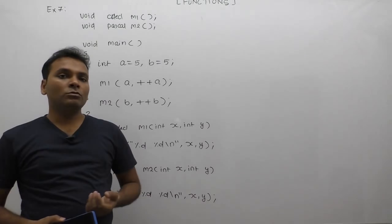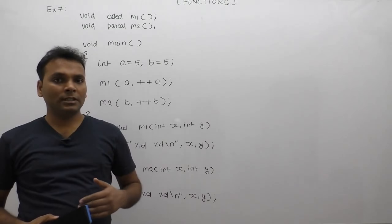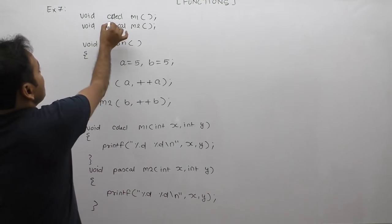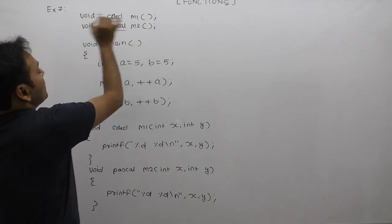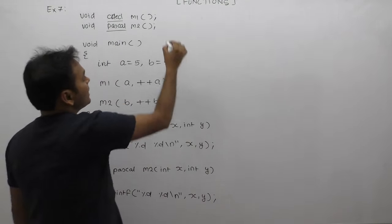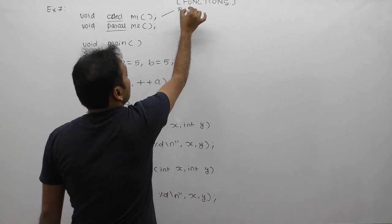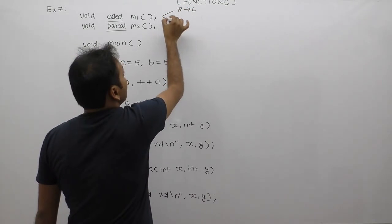Now, next example related to declaration types of functions. There are two types of function declarations available in C: C declaration and Pascal declaration. According to C declarations, arguments are resolved from right to left, but parameters are resolved from left to right.